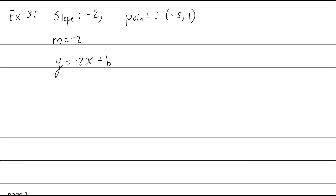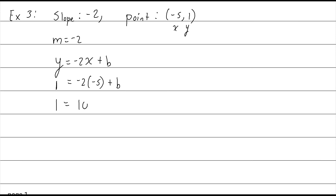If this is the equation of the line and (-5, 1) is a point on that line, plugging those numbers in will give an equation that has to be true. So: 1 = -2(-5) + b. Negative 2 times negative 5 is positive 10. Subtracting 10 from both sides, 1 minus 10 is negative 9. So b = -9, giving us y = -2x - 9.